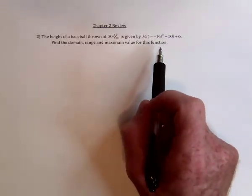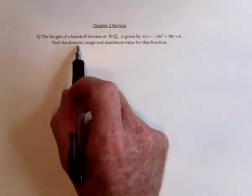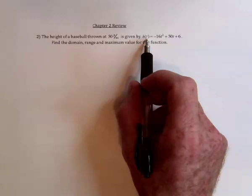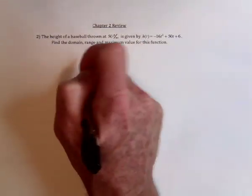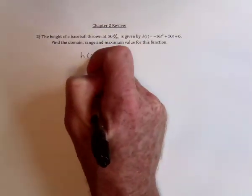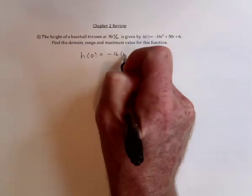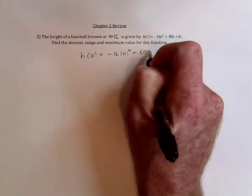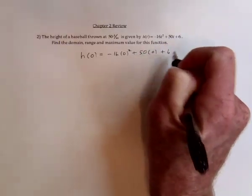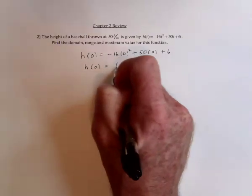For this one it says find the domain, range and maximum value. Since this is talking about time, the domain can't be negative but it could be zero. The zero would mean at the moment that the baseball is released, what is the height? If we substitute a zero in here, then we get the height at time zero is equal to six feet.